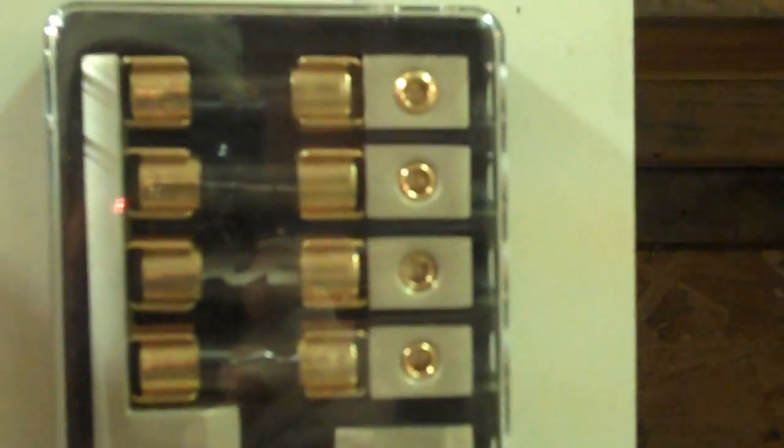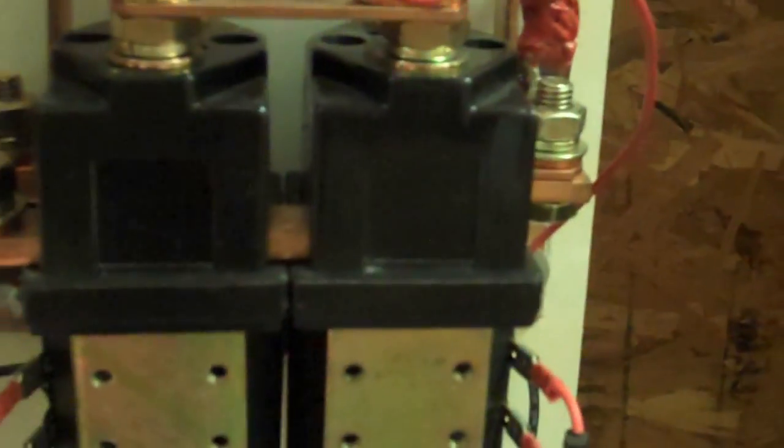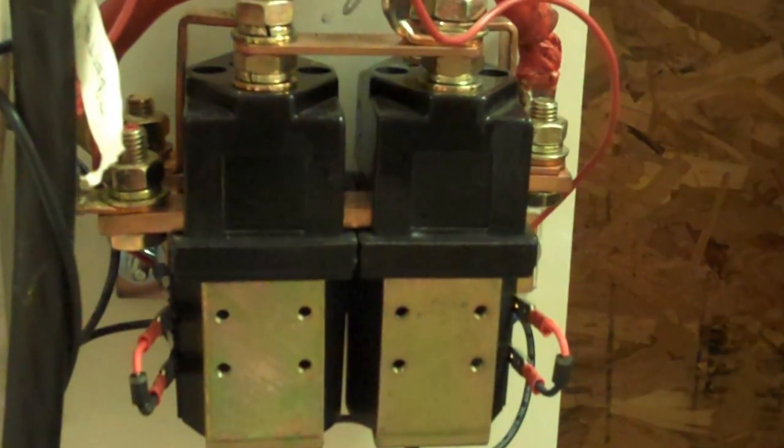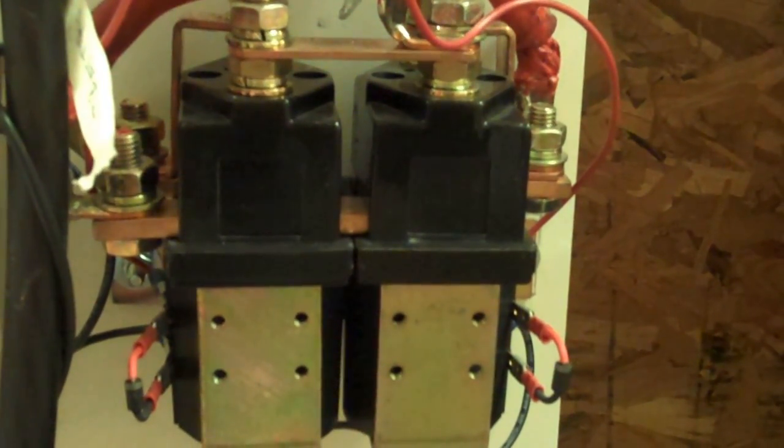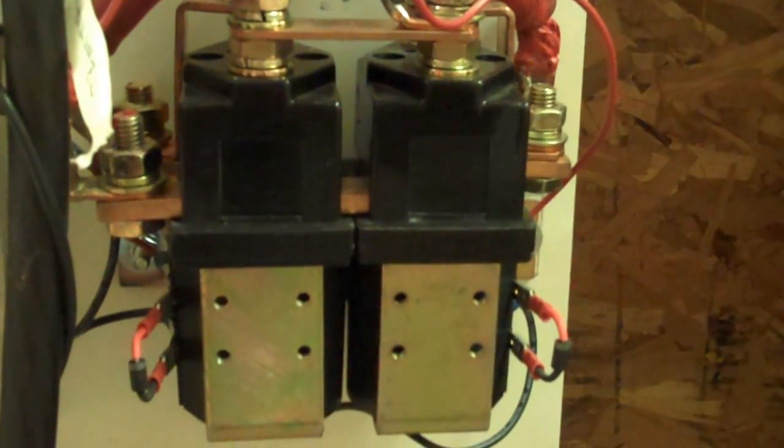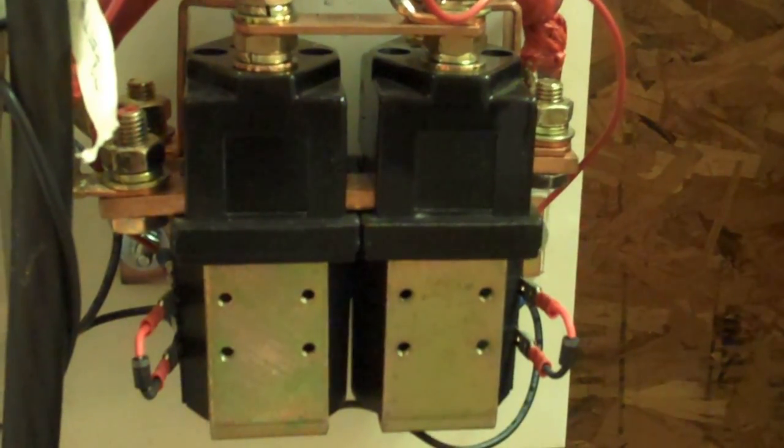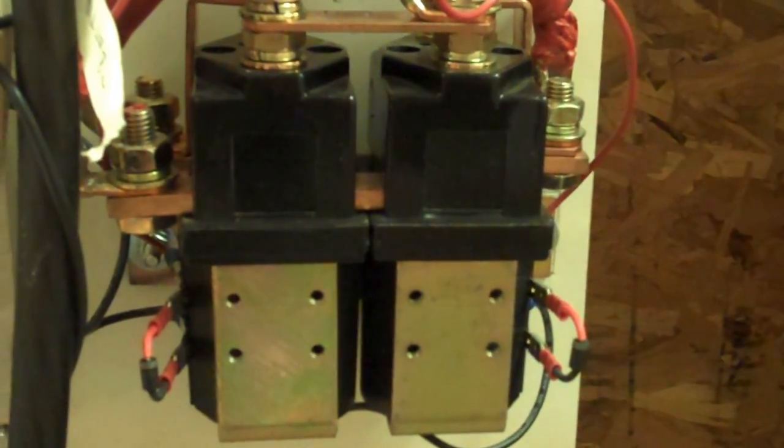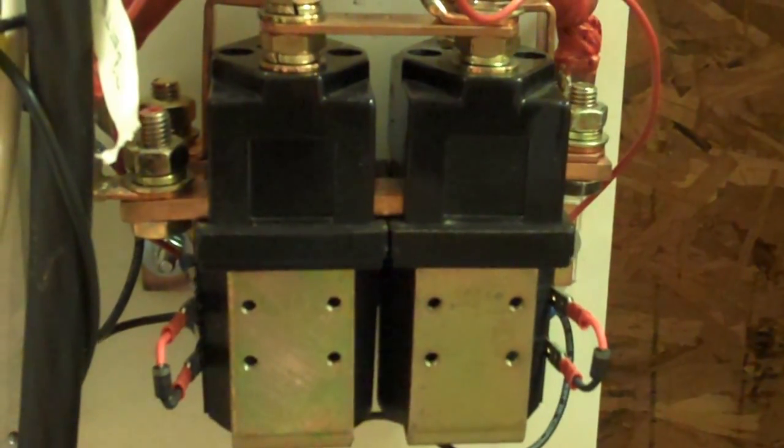That right there is a reverse and forward switch. That's an Albright, rated at 400 amps. So even though I'm only maxed probably about 200, I'm kind of one of those guys—I like to overengineer things.